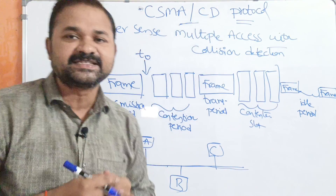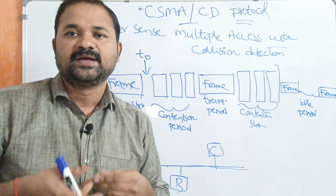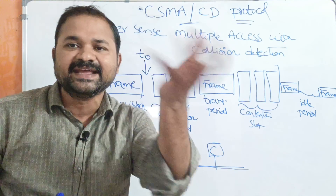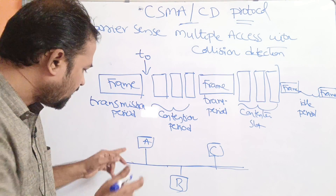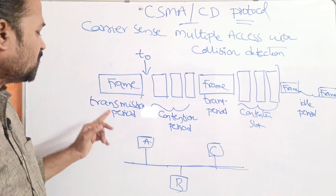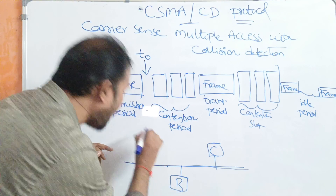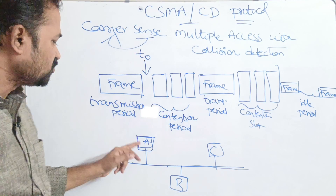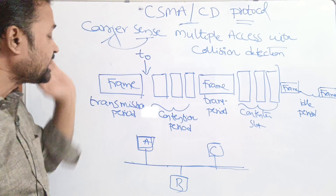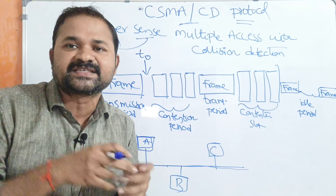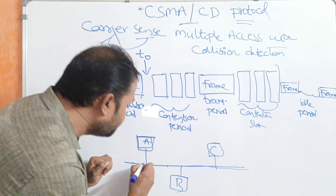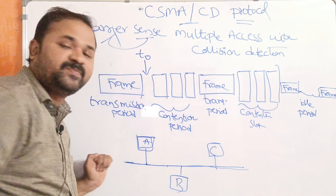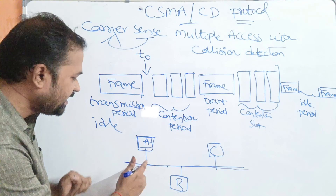CSMA/CD is a random access protocol. Random access protocol means any device can send data at any time. For sending data to C, this station — device A — has to sense the carrier; it has to listen to the carrier. If that carrier is busy, then the station has to wait until the carrier becomes idle. So the carrier has two states: busy and idle.